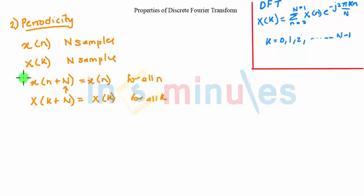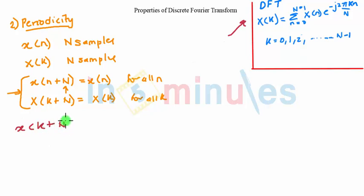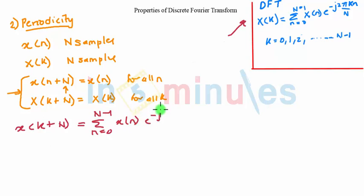Now let us understand what these both terms mean — this is the property of periodicity. To prove this property, we use the basic definition and formula of DFT. By definition, x of (k + N) is equal to the summation from n = 0 to N minus 1 of x of n times e raised to minus j 2 pi n, with the term (k + N) upon capital N.